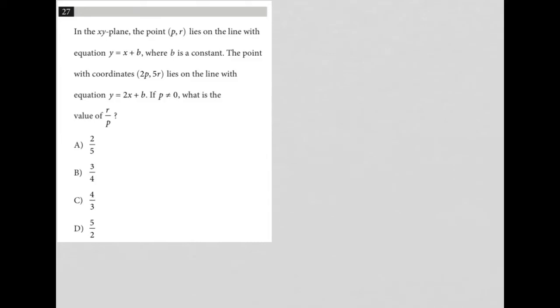So this question says, in the xy plane, the point PR lies on the line with equation y equals x plus b, where b is a constant. So I'm going to write some of this stuff down. Okay, so we have an equation, y equals x plus b. We know that that's some line represented there. And we also know that the point p comma r is on that line.